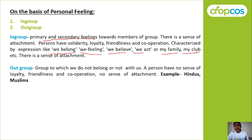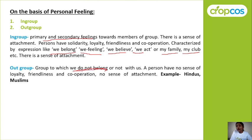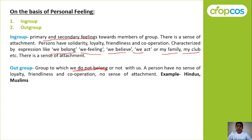When there is a 'we feeling,' it means the person feels they belong to that group — that is an in-group. An out-group is a group to which we do not belong; we immediately feel we are not part of this group, we feel like an outsider. In an out-group, a person has no sense of loyalty, friendliness, or cooperation, and there is no sense of attachment.